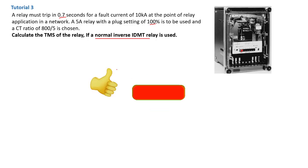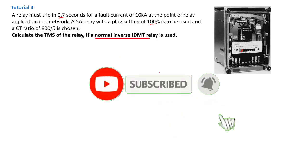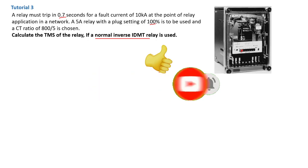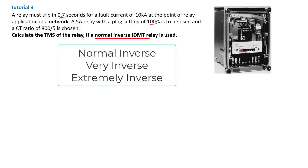Please don't forget to subscribe to Simtech channel if you like this tutorial and give a thumbs up. Now, talking about the normal inverse IDMT: the IDMT relay has mainly three characteristics curves — the normal inverse, the very inverse, and the extremely inverse characteristics.